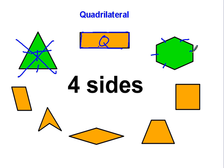This has one, two, three, four, five, six sides, so that is not a quadrilateral. One, two, three, four sides, that is a quadrilateral.